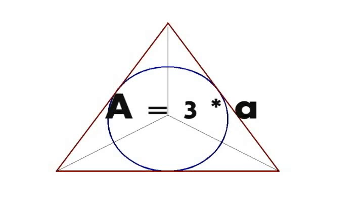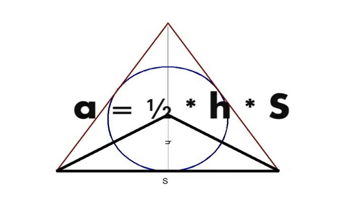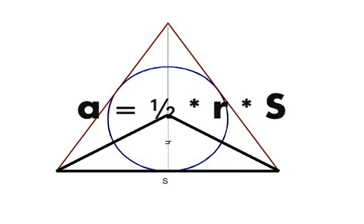Since this is an equilateral triangle and all the sides are the same length, and it meets right at the center, each of these smaller triangles all has the same area. So three times the area of the smaller triangle, and the smaller triangle has an area which is one-half the height times the base. Now, the height of the small triangle is equal to the radius of the circle, and the base is equal to one of the sides of the triangle.